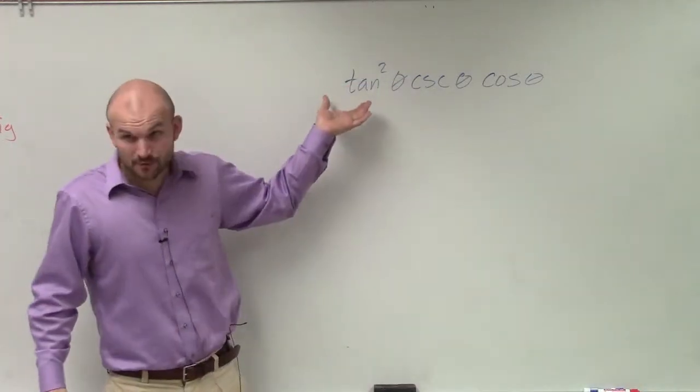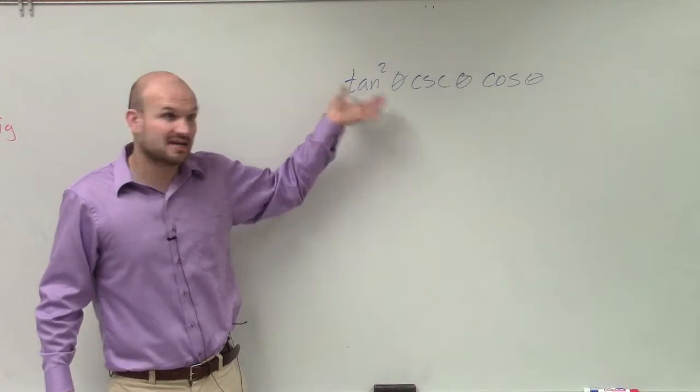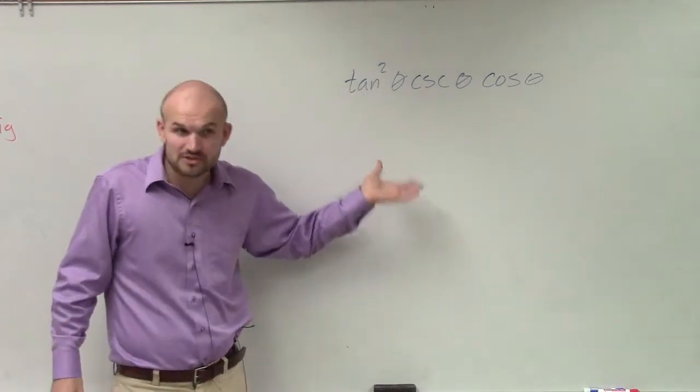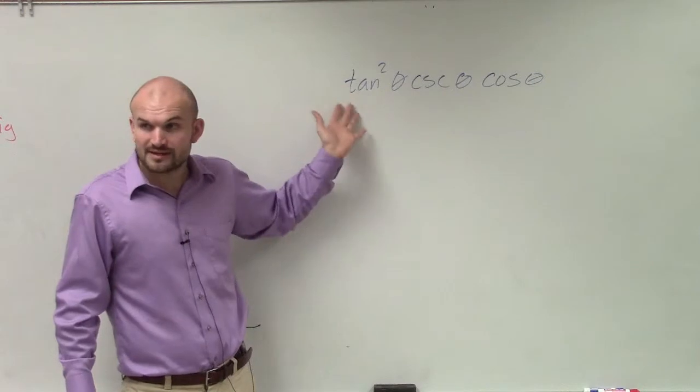We already talked about tangent. There's a lot of different ways to rewrite tangent, right? I could use Pythagorean, I could use a reciprocal, I could use the quotient. There's a lot of different ways we could rewrite this using our identities.